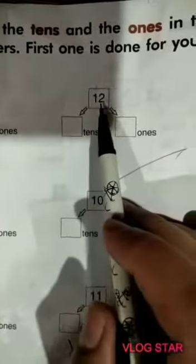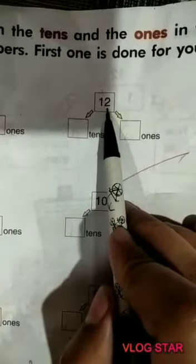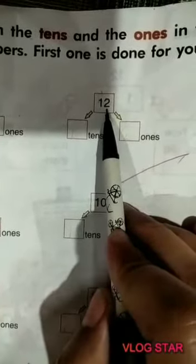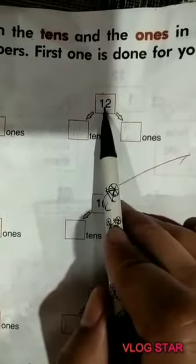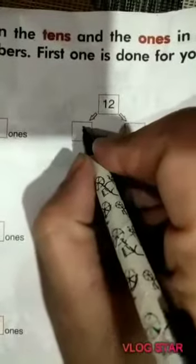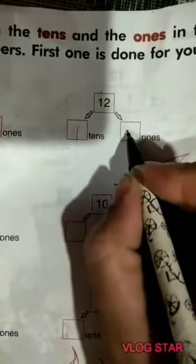Look, it's a number 12. We have to divide it into two parts. One is one tens and two is two ones.